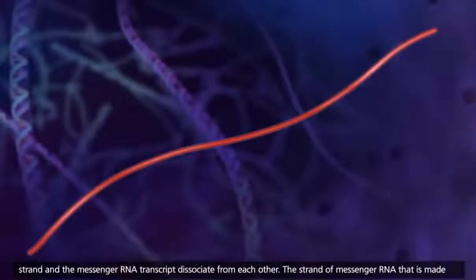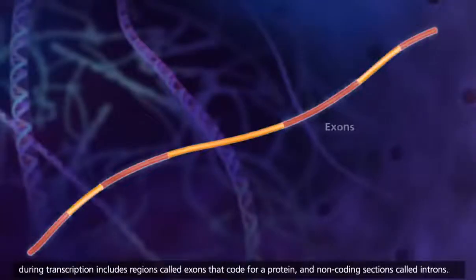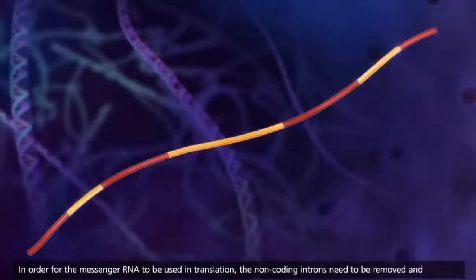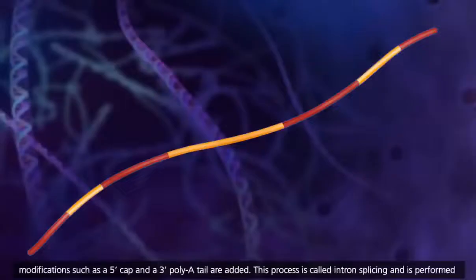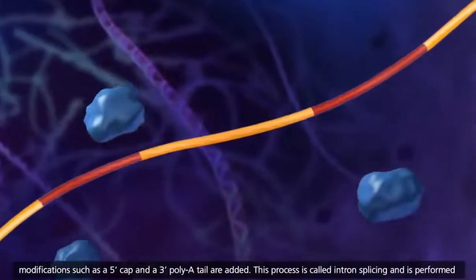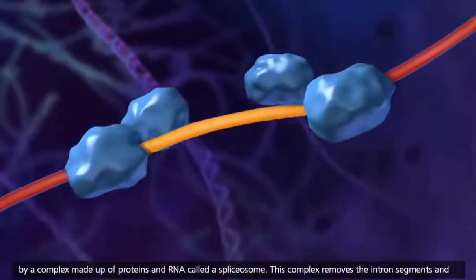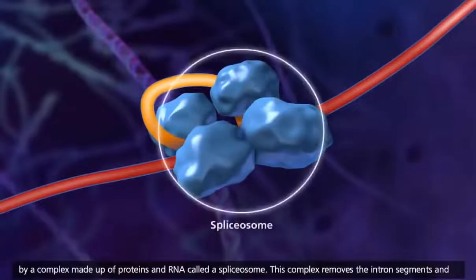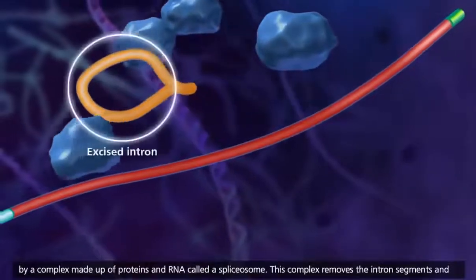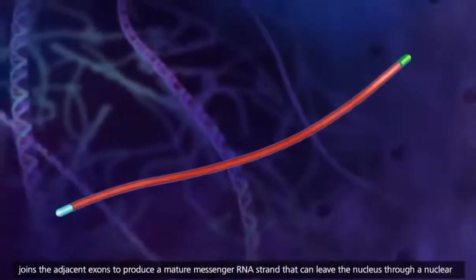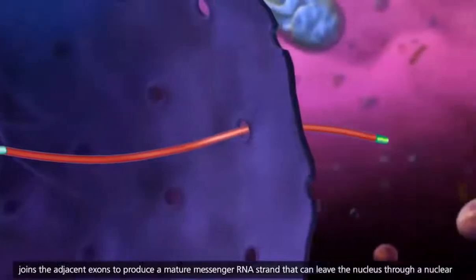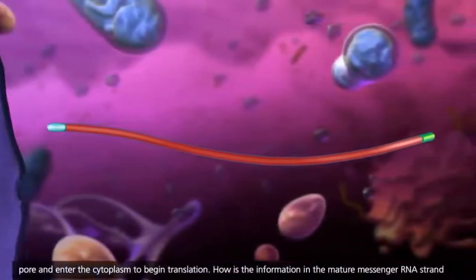The strand of messenger RNA that is made during transcription includes regions called exons that code for a protein, and non-coding sections called introns. In order for the messenger RNA to be used in translation, the non-coding introns need to be removed, and modifications such as a five-prime cap and a three-prime poly-A tail are added. This process is called intron splicing and is performed by a complex made up of proteins and RNA called a spliceosome. This complex removes the intron segments and joins the adjacent exons to produce a mature messenger RNA strand that can leave the nucleus through a nuclear pore and enter the cytoplasm to begin translation.